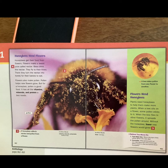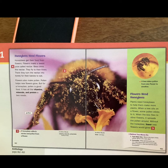Honeybees need flowers — remember that partnership, working together. They each have a job. Honeybees get their food from flowers. Flowers make a sweet juice called nectar; bees drink the nectar and fly to their hives, where they turn the nectar into honey for the babies to eat. Flowers also make pollen. Pollen helps new flowers grow, but for a honeybee, pollen is a good food — it has all the vitamins, minerals, and protein a bee needs. You can see the bee has pollen on him in the picture.